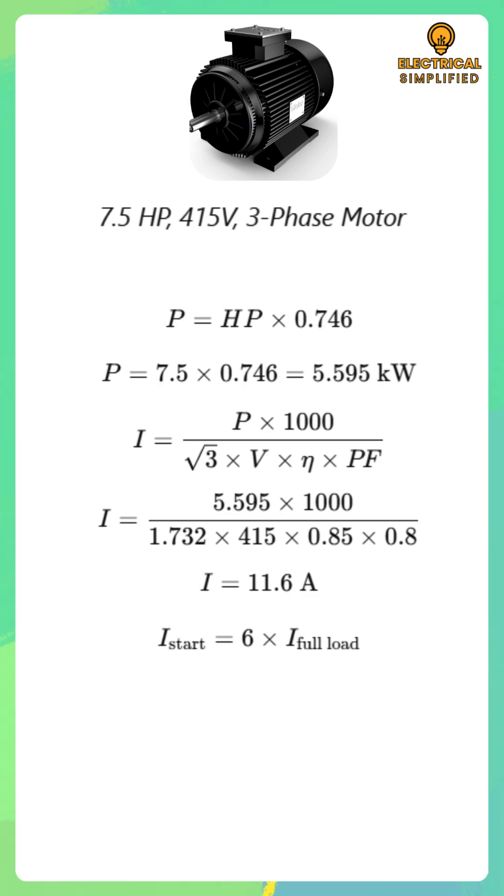Starting current equals six times full load current. Substituting the full load current, starting current equals six multiplied by 11.6, which gives approximately 69.6 amperes.